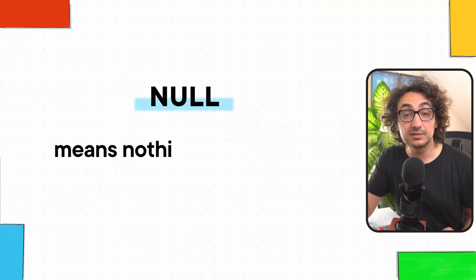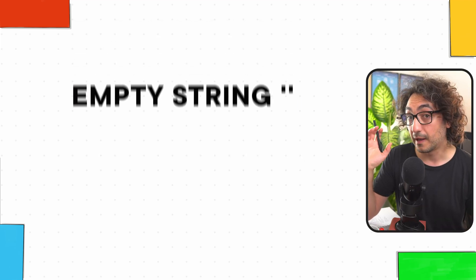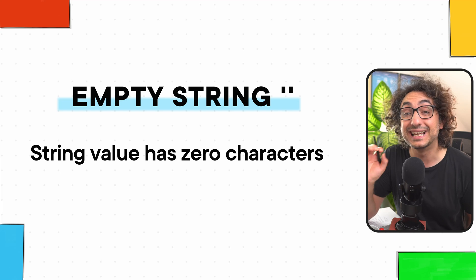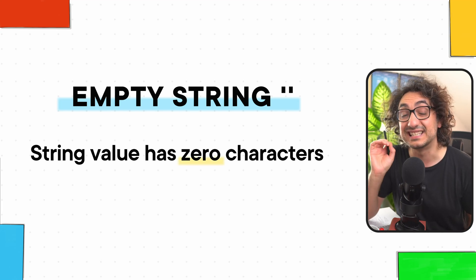There is something that really confuses a lot of developers or anyone working with data in databases and SQL, and that is the differences between NULLs, empty strings, and blank spaces. NULLs mean 'I don't know what the value is — it is unknown.' On the other hand, the empty string means 'I know the value, it is nothing.' The empty string is a string value with zero characters, which is totally different from NULLs.